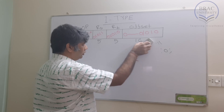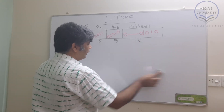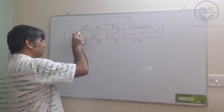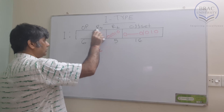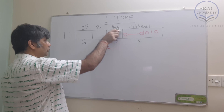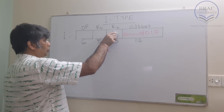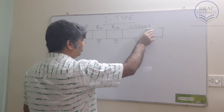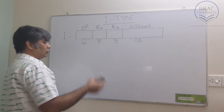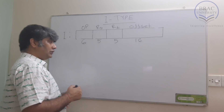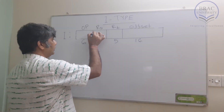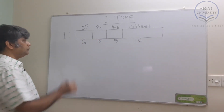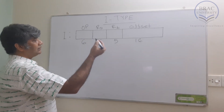Now we'll look at another I-type instruction — this time not an arithmetic instruction but a memory instruction. We are not very much concerned about the opcode value since it will be provided in the question; we can convert it from integer to binary when given.